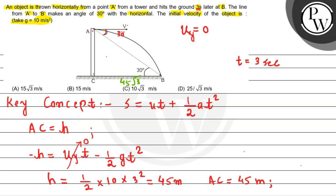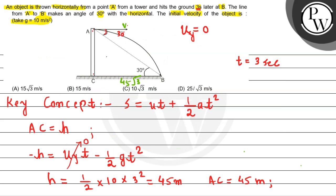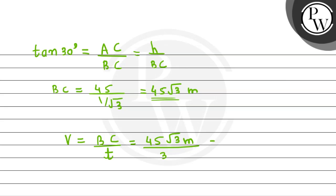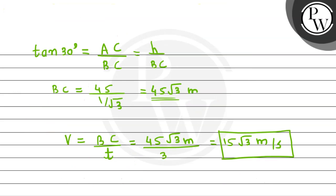Now to cover up this 45 under root 3 meter of distance, its initial velocity is what, that is v. So simply the particle covering this much of distance in 3 seconds, so by using the formula of velocity, we can say that v should be equals to the distance covered by it divided by time taken. And this will be equals to BC, which we found as 45 under root of 3 meter, divided by the time taken which is 3 seconds. So this will be simply divided by 3, so it comes out 15 under root of 3 meter per second. And this is what we have asked to find out, the initial velocity of the object. And this we have found by using the concept of second equation of motion.